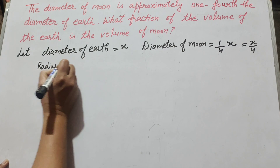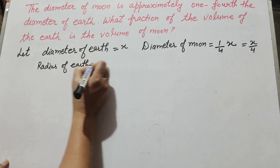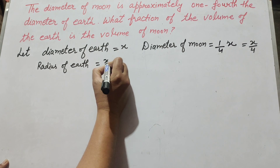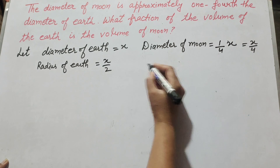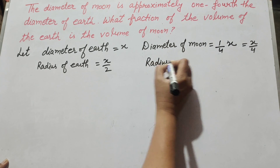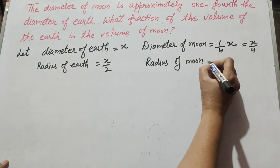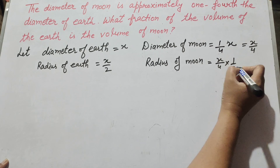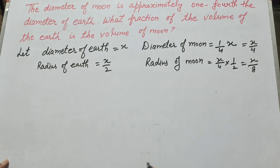Now we find the radius of earth. Radius equals diameter divided by 2, so the radius of earth is x over 2. Now we find the radius of moon. The radius of moon is (x over 4) divided by 2, which equals x over 8.